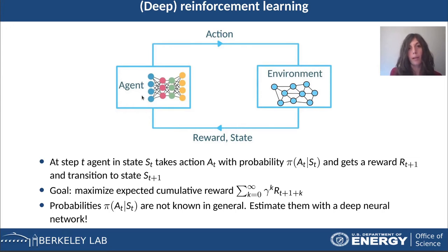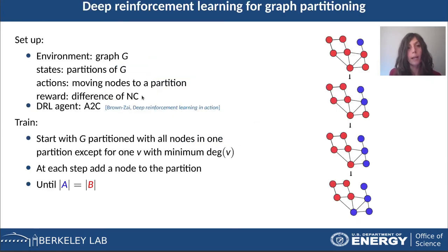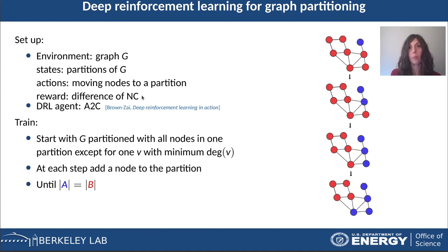This deep neural network will output probabilities — a probability for each node — and the actions will be taken according to these probabilities. More precisely, in our context the setup is as follows. The environment is a graph, the states are the partitions of this graph, the actions are moving one node from one partition to the other, and the reward is the difference of the normalized cut before and after moving the node.